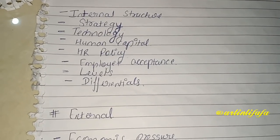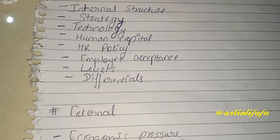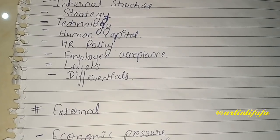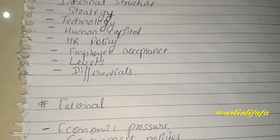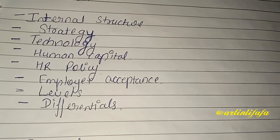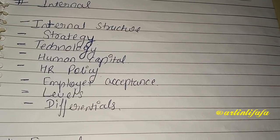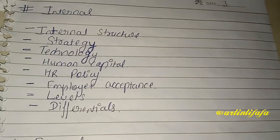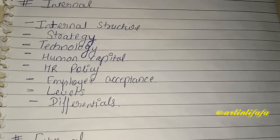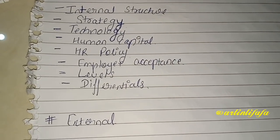Internal equity میں مزید factors دیکھے جاتے ہیں: کونسی technology use ہو رہی ہے، human capital کیا ہے، human کی demand کیا ہے، HR policies کے according کیا ہوں گی۔ پھر employee acceptance دیکھتے ہیں کہ ایک employee کی minimum acceptable compensation کیا ہے۔ Levels بھی دیکھتے ہیں — organization میں top، middle اور lower تین levels ہوتے ہیں اور تینوں کی salary اس بنیاد پر ہوگی۔